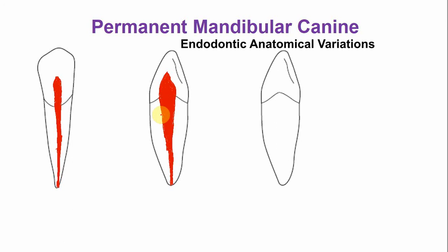Variations in the endodontic anatomy are common in the mandibular anterior teeth. Among the mandibular anterior teeth, the incidence of a second canal is comparatively very low in the mandibular canine. The pulp chamber is the same. The only difference is that in around six percent of mandibular canines, they have two root canals.